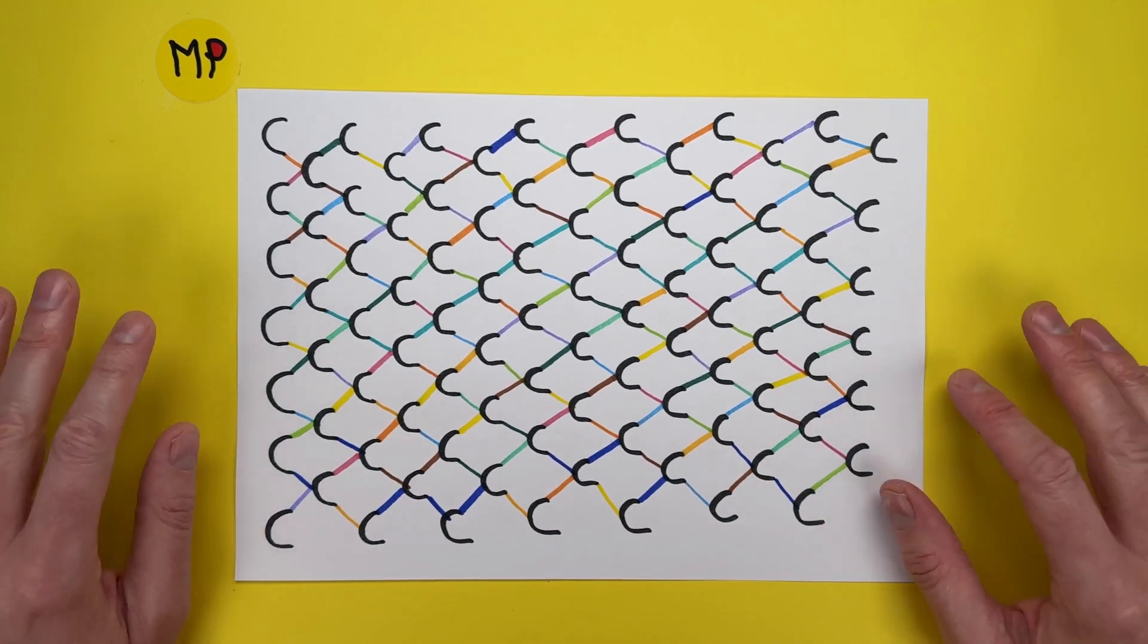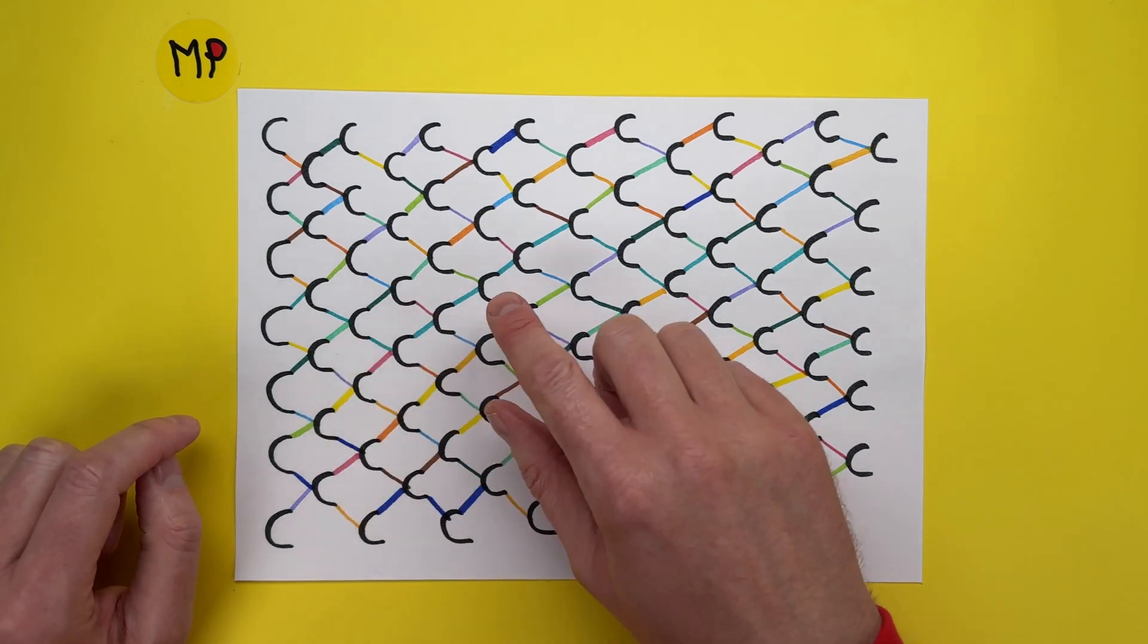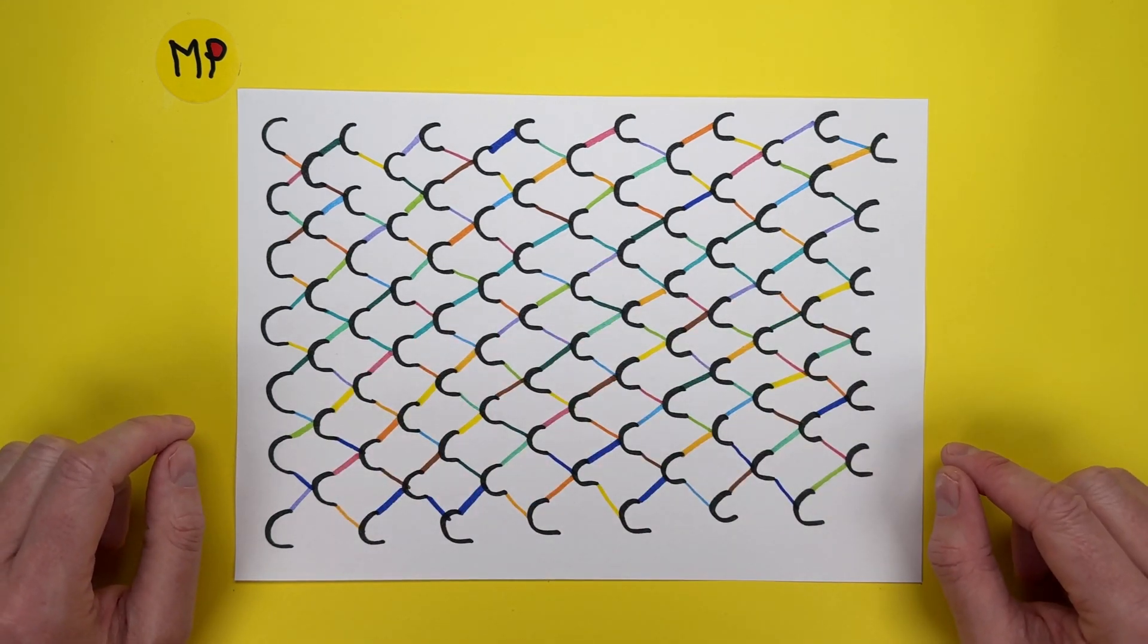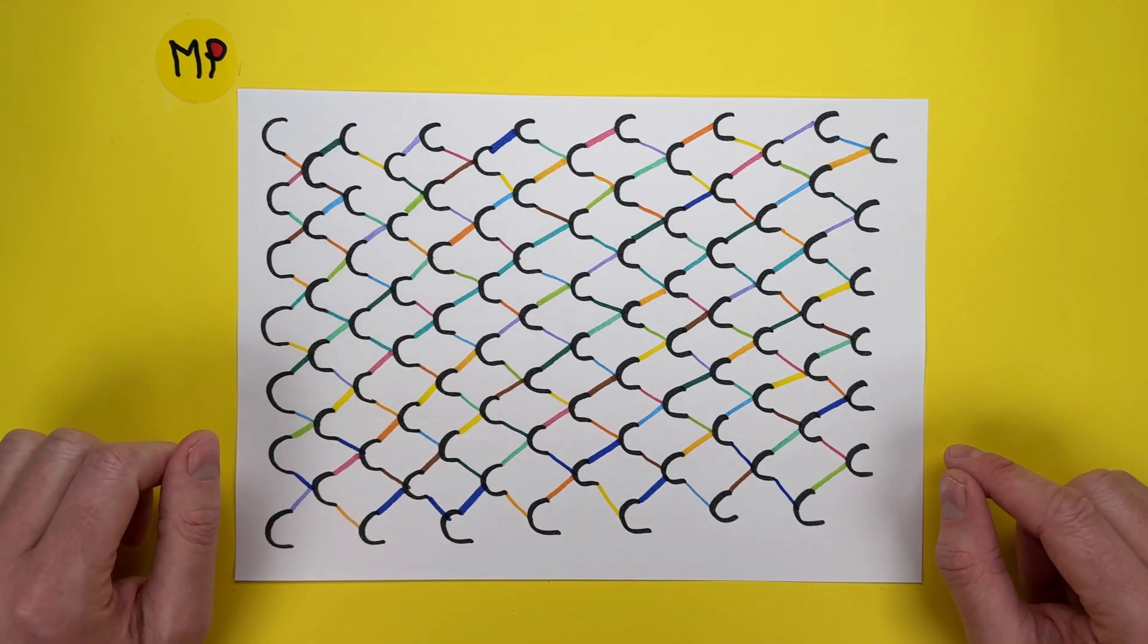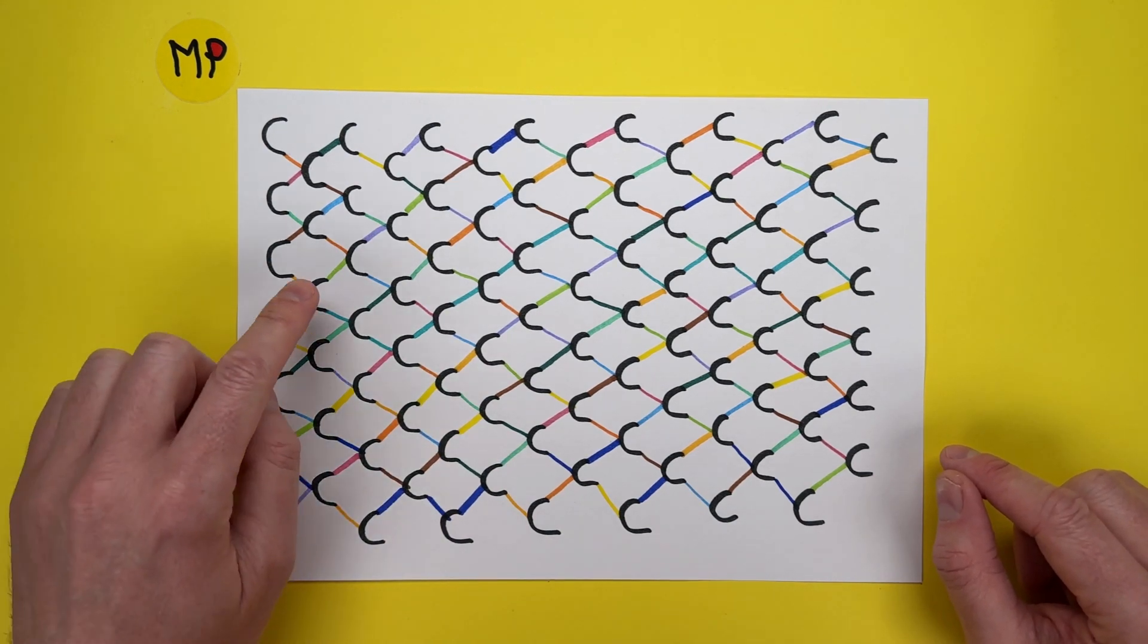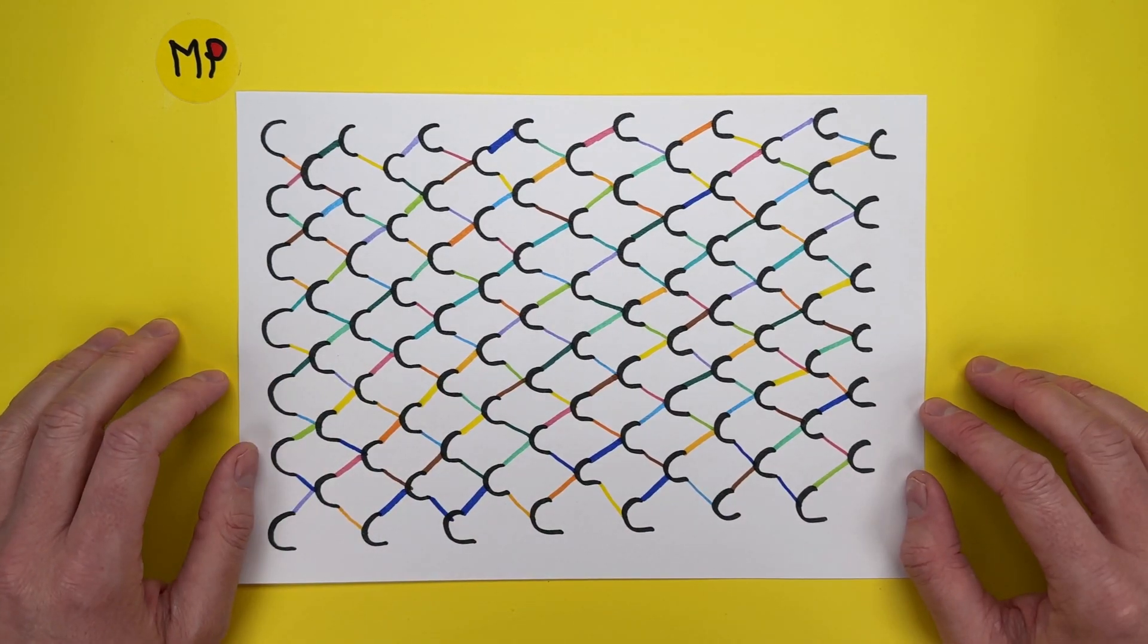And again, maybe show somebody and see if they can spot the single line or if they can spot the difference amongst the colors. And we've got our single line here. All done. Yay!